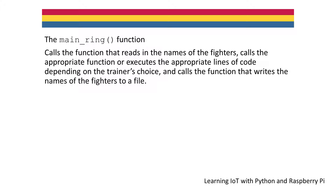We'll name the main function MainRing. The MainRing function calls the function that reads in the names of the fighters from a file, calls the appropriate function or executes the appropriate lines of code depending on the trainer's choice, and calls the function that writes the names of the fighters to a file.